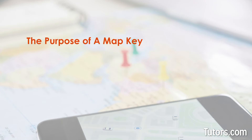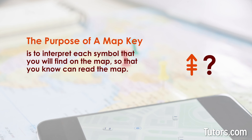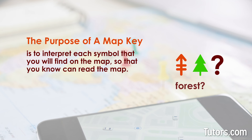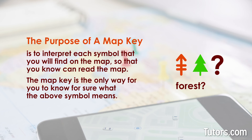The purpose of a map key is to interpret each symbol that you will find on the map so that you can read the map. For example, what does this symbol mean? It is important to know — is it an arrow pointing in a direction? Does it stand for a single tree, or is it indicating a forest? The map key is the only way for you to know for sure what a symbol means.